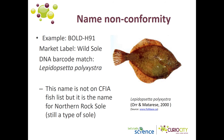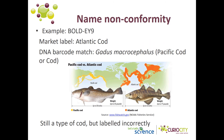There are also a number of instances of what is known as name nonconformity. For example, sample BOLD age 91 had the market name of wild sole and a DNA barcode match of Lepidopseta polyxistra. Although this name is not on the CFIA fish list, Lepidopseta polyxistra has the common name of northern rock sole, which is still a type of sole. Another example is sample BOLD EY9, which had the market name of Atlantic cod, but its DNA barcode matched Gadus macrocephalus, known more commonly as Pacific cod. Although this species is on the CFIA fish list and is a type of cod, it still was not labeled correctly.